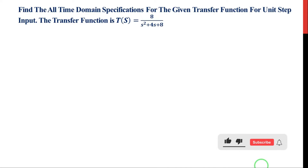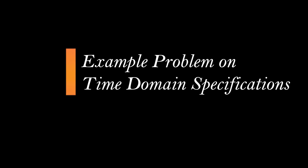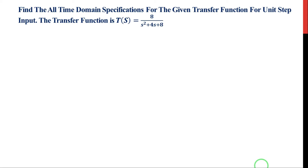Hello guys, in this lecture we will solve this example on time domain specifications. The question is: find all time domain specifications for the given transfer function for unit step input. The transfer function is 8 divided by s-squared plus 4s plus 8.